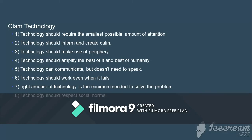The second principle is: technology should inform and create calm. Whatever devices and IoT objects we create are for humans or for society. The person's primary task should not be computing — it should be being human. You have to understand what the needs of the people are and solve their problems. That is what creating calm technology for society means.